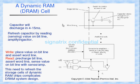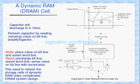First we'll look at the basic fundamental cell of main memory. Here we have one transistor and one capacitor. This capacitor stores charge for a logic one and no charge for a logic zero. So if the logic value one is stored in this cell, the capacitor will be charged; otherwise it will be discharged. The transistor is used as a switch here.